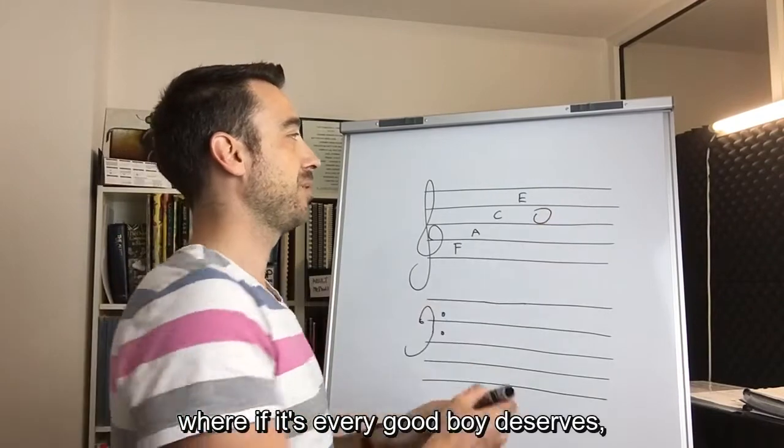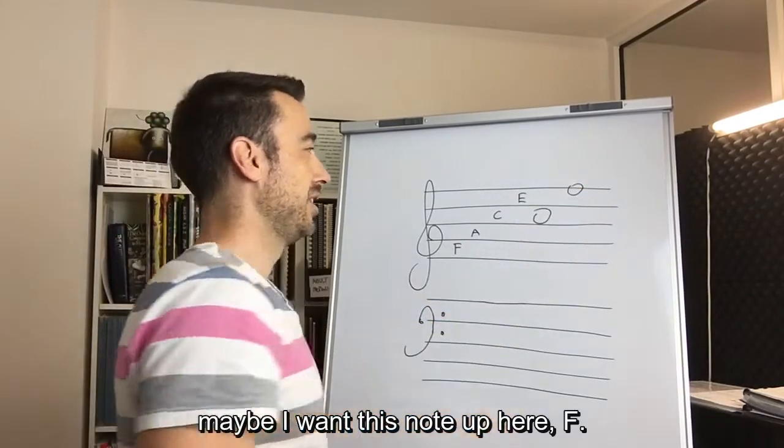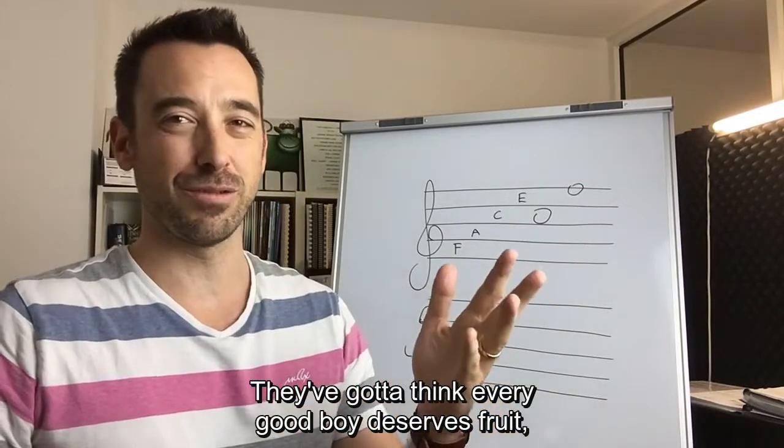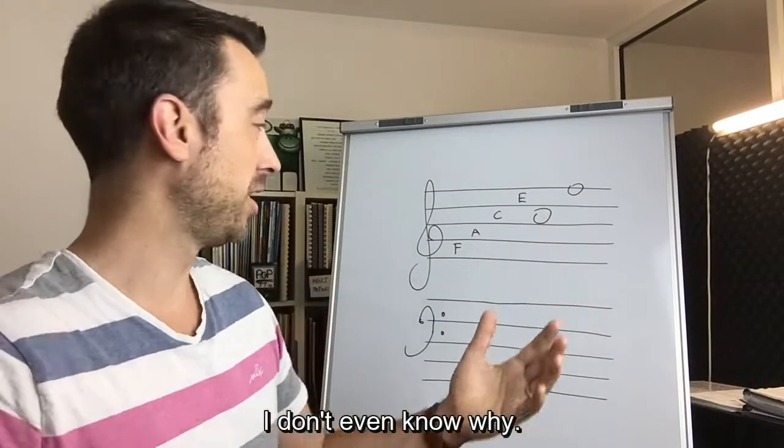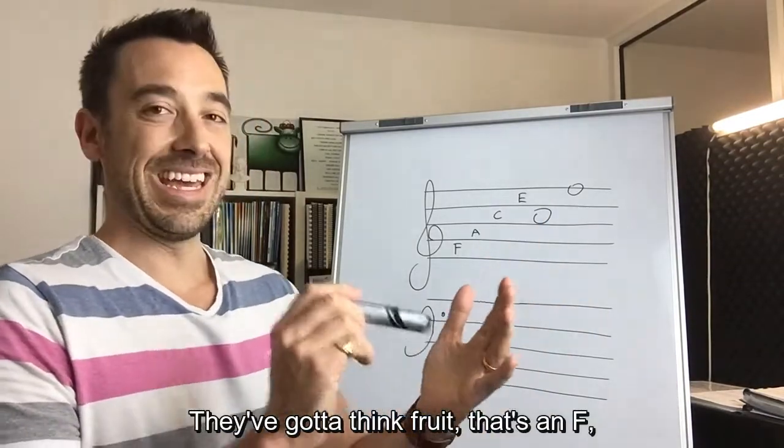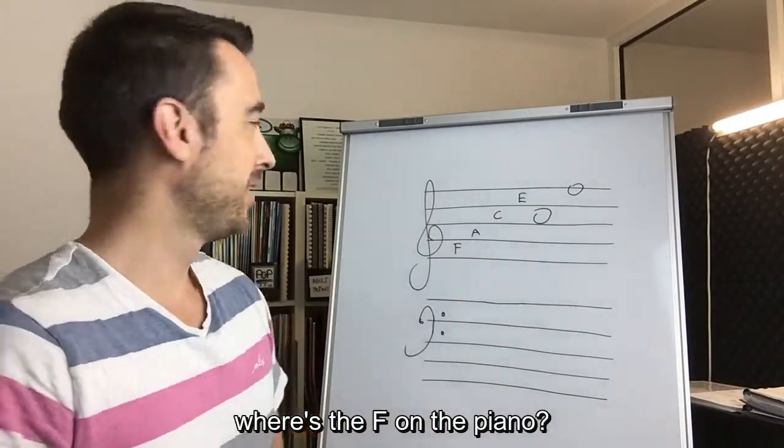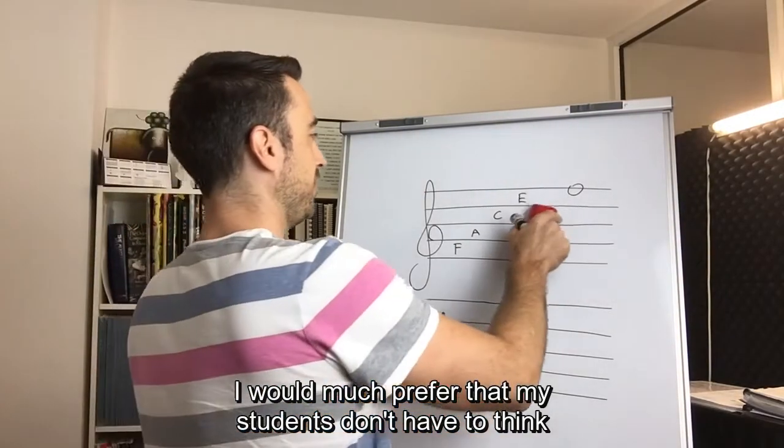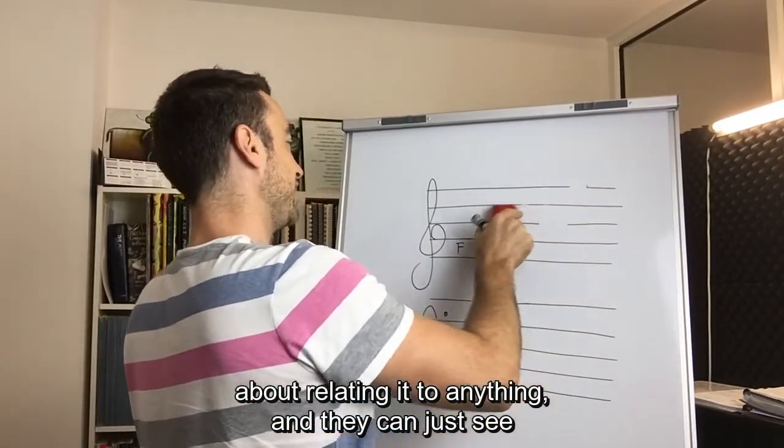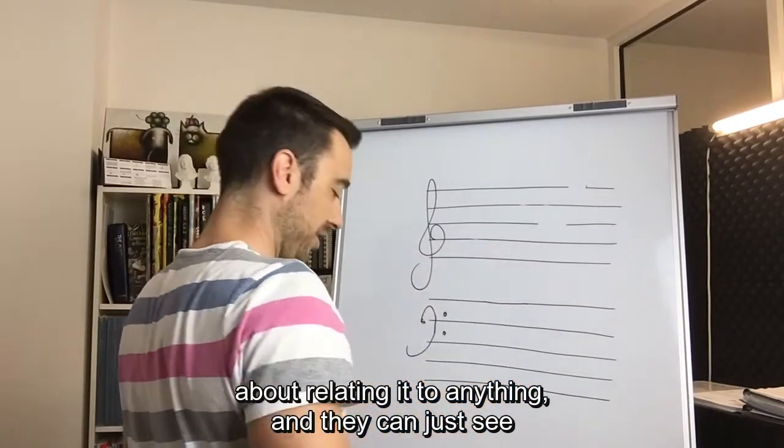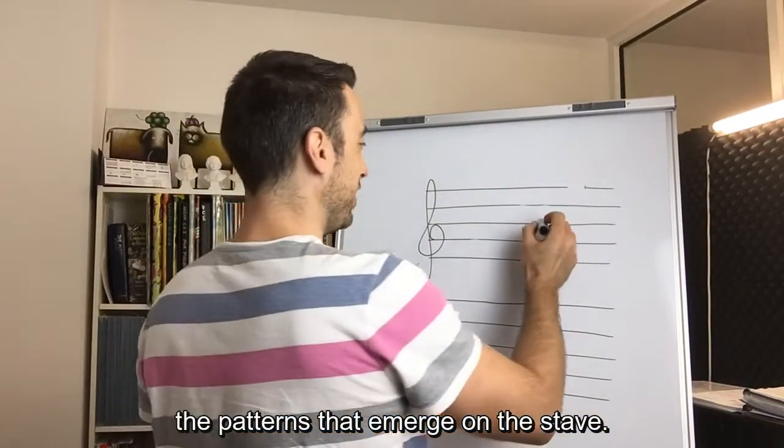Or if it's Every Good Boy Deserves, maybe they want this note up here, F. They've got to think Every Good Boy Deserves Fruit—that's what we say here in Australia, I don't even know why. They've got to think fruit, that's an F. Where's the F on the piano? I would much prefer that my students don't have to think about relating it to anything and they can just see the patterns that emerge on the stave.